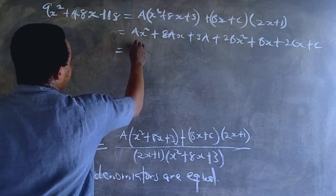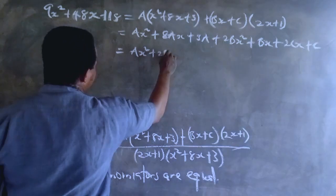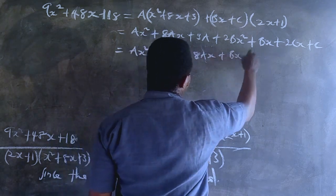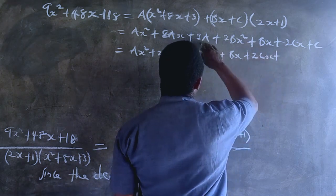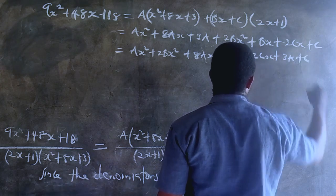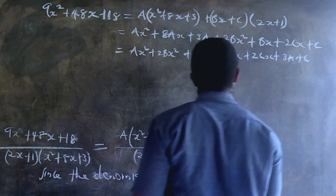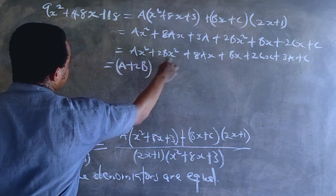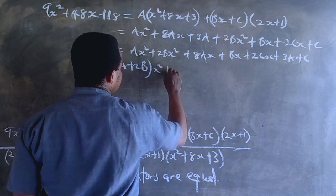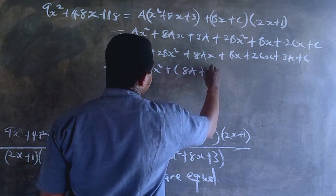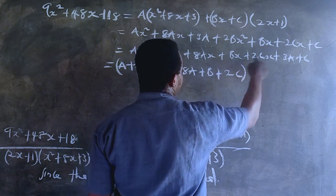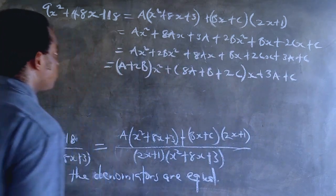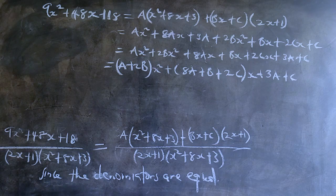Let's go on and rearrange that in a form that will help us compare both sides of the equation. So we have a plus 2b times x squared, then 8a plus b plus 2c times x, then the constant terms 3a plus c. While on the other side, we have 9x squared plus 48x plus 18. So factoring the right-hand side: we have a plus 2b times x squared, plus 8a plus b plus 2c times x, plus 3a plus c.